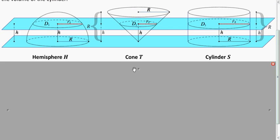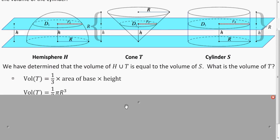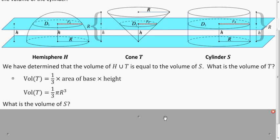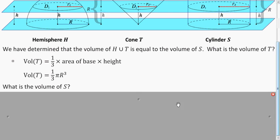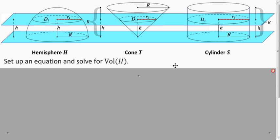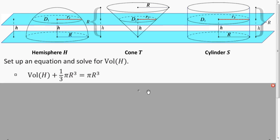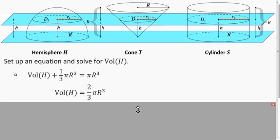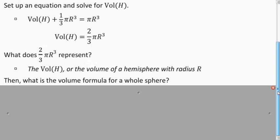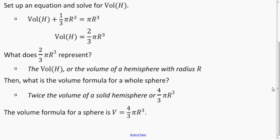So if we add up the volumes of the hemisphere and the cone, we get the volume of the cylinder. The volume of the cone is one-third π r³ (since the height equals the radius by construction), and the volume of the cylinder is π r³. Plugging these into Cavalieri's Principle and subtracting, we get that the volume of the hemisphere is two-thirds π r³. To get the full sphere, we double it: four-thirds π r³ is the volume of the sphere.